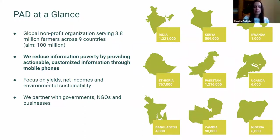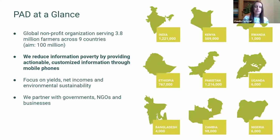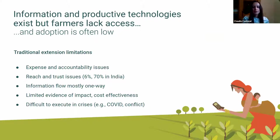PAD was created six years ago and today we operate in nine countries. We're very excited to be starting operations in Colombia and hopefully Brazil this year. We are a non-profit organization currently reaching 3.7 million farmers. What we do: we reduce information poverty by providing actionable and customized information delivered through mobile phones — innovating, learning, iterating, and scaling the use of technology, data science, behavioral economics, and user-centered design to support low-cost local services at scale.